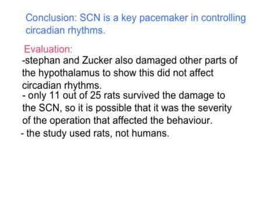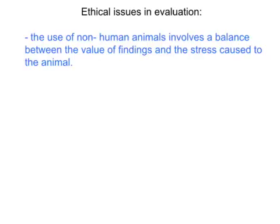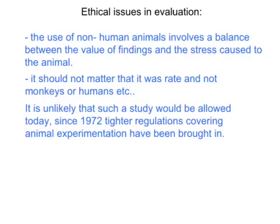This study used rats and not humans, which raises the issue of generalising from rats to humans. Although it is likely that human endogenous pacemakers are organised in a similar way, this can only be confirmed by studies on humans. You can also gain AO2 points from ethical issues. The use of non-human animals involves a balance between the value of the findings to humans and the stress caused to the animal. The fact that so many rats died in this study is a major concern. It is highly unlikely that such a study would be allowed today — since 1972 when this experiment took place, tighter regulations covering animal experimentation have been introduced.